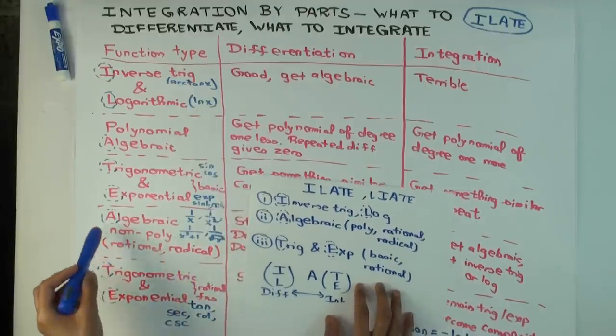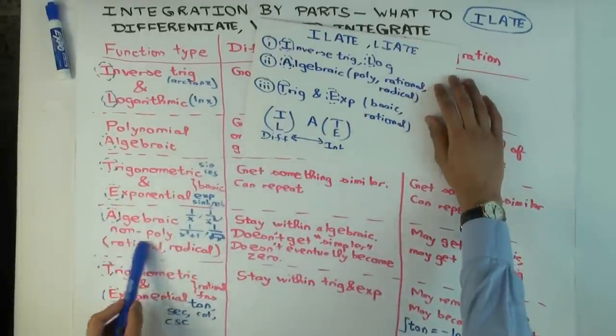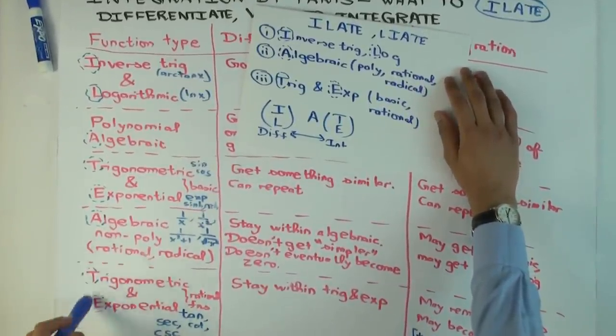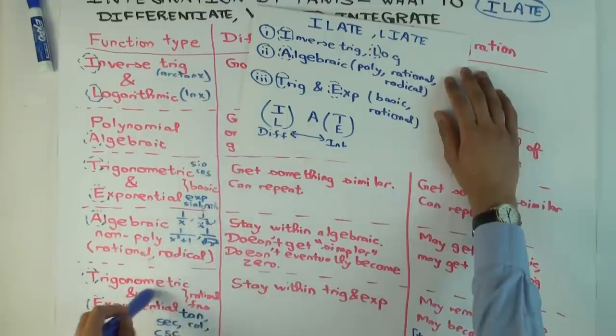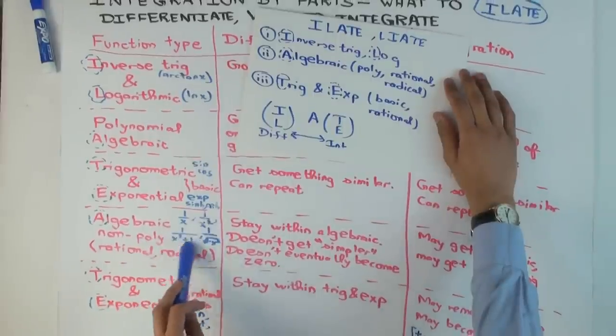Okay? Now there's a little issue here with these other two classes of functions, which are algebraic non-polynomial, like rational functions, trigonometric and exponential. When you see some of these, the trigonometric and exponential rational functions like tan, secant, cotangent, cosecant, or you see these algebraic non-polynomial like rational functions,